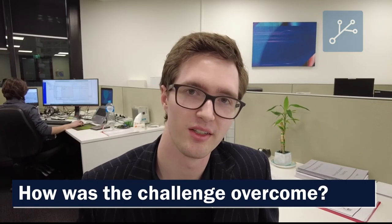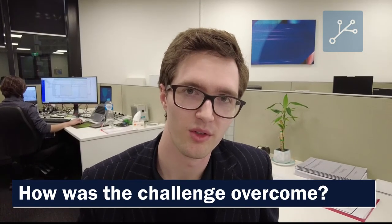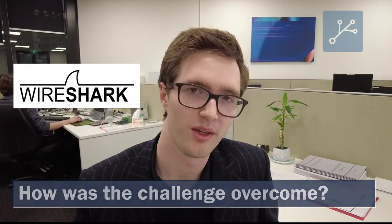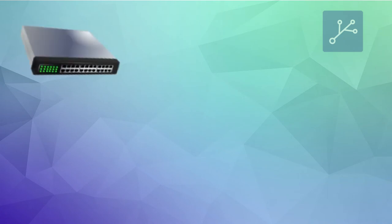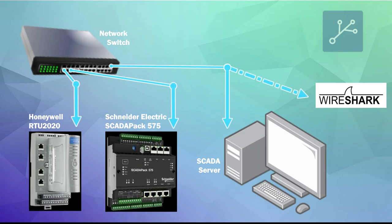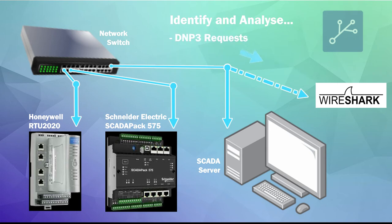Troubleshooting communication was done through Wireshark, where we can see all the different packets sent between the two RTUs. We had a network switch with a mirrored ethernet port, so we can see the outgoing data from the master RTU. For example, we can see DNP3 requests being triggered and verify if the RTU is responding correctly according to our configuration.